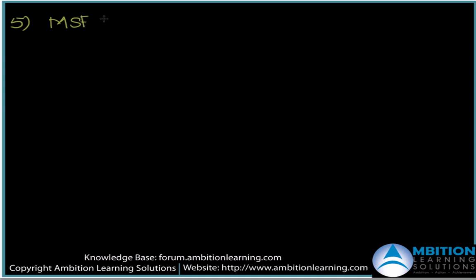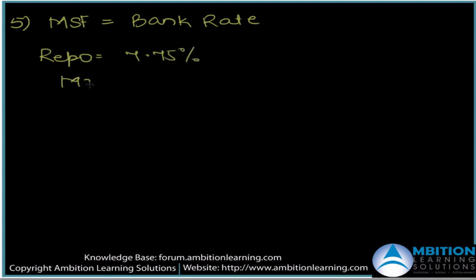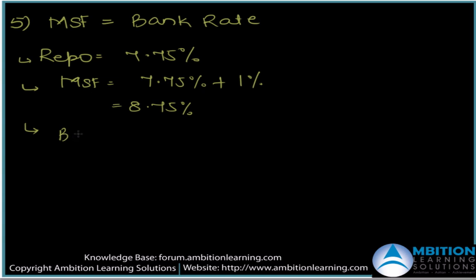The fifth point: in the current monetary policy framework, the marginal standing facility rate and the bank rate are always equal. The repo rate is 7.75%, the MSF is 100 basis points higher at 8.75%, and the bank rate is also one percent higher than the repo rate at 8.75%. So unless there is a sudden policy change, the MSF and the bank rate remain the same.